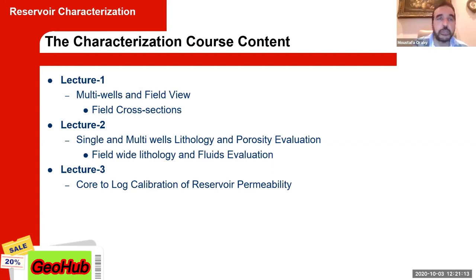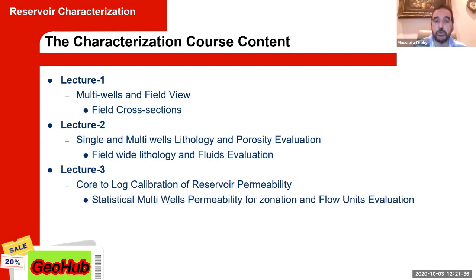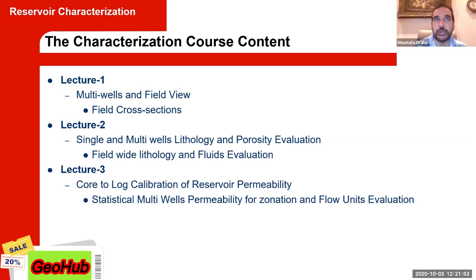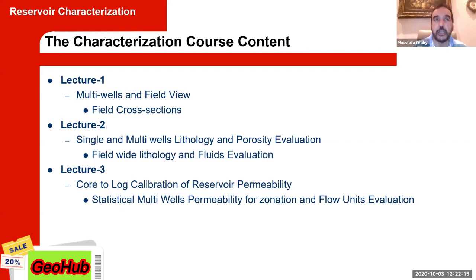In lecture three we'll talk about core-to-log calibration. After the multi-well cross section and lithology/porosity identification, we correlate these to core. We spend a lot of money on core not just to look at pieces of rock — it has to be calibrated to the reservoir, especially permeability. From permeability we build zonation, we look at flow units, and when combined field-wide, we understand how our reservoir is performing and producing.